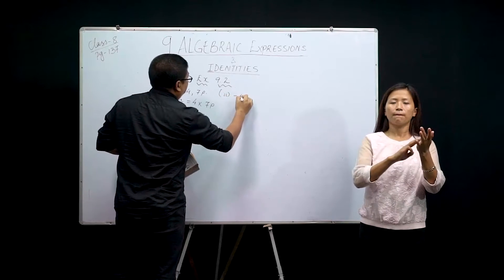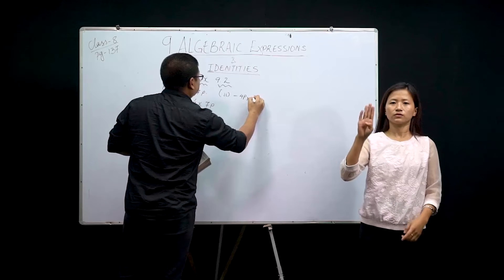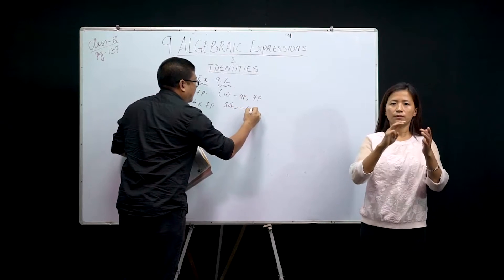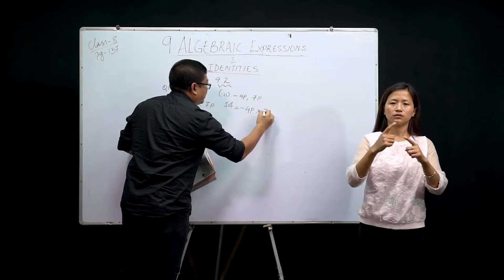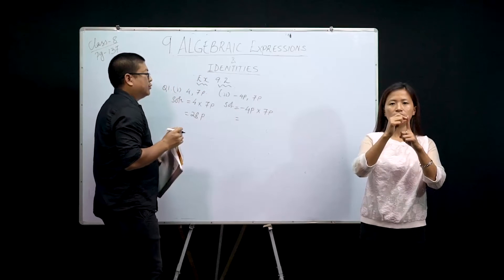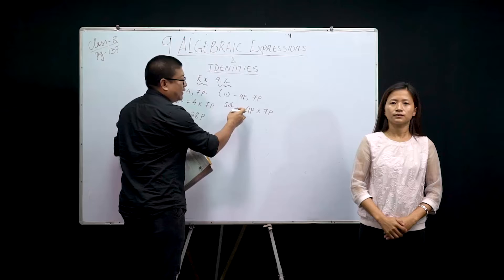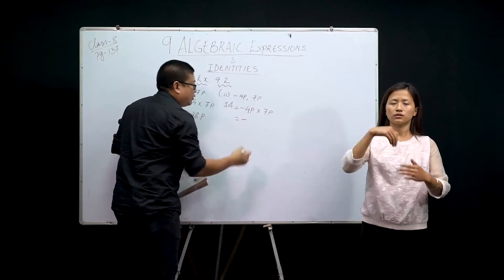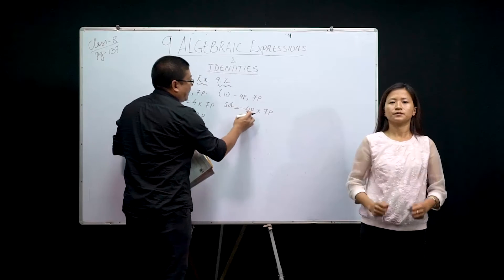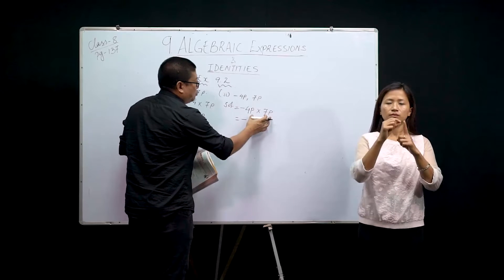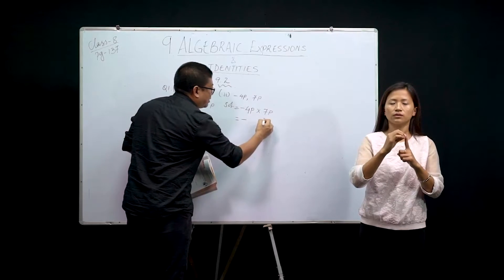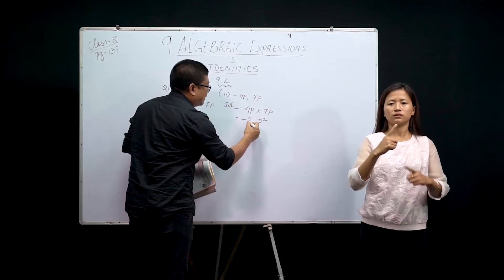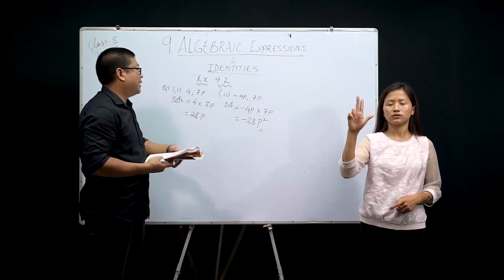Next is minus 4p and 7p. Written as: minus 4p into 7p. First multiply the signs: one is minus, one is plus, so minus times plus gives minus. Now look at p — we have two p's, so we write p². And 4 into 7 is 28. So the answer is minus 28p². This is how you multiply monomial and monomial.